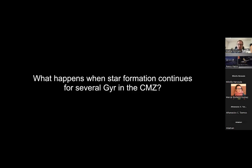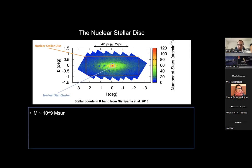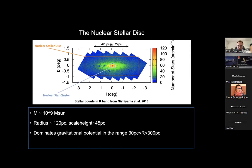When star formation in the CMZ continues for several gigayears, it builds up a structure known as the nuclear stellar disk. Here I show the nuclear stellar disk in star counts from K-band data from Schönrich et al. — the green structure — not to be confused with the nuclear star cluster, the much smaller red structure in the center. The nuclear stellar disk: total mass ~10⁹ solar masses, radius 120 parsecs, scale height 45 parsecs, dominating the gravitational potential between 30 and 300 parsecs from the center; it could be non-axisymmetric, possibly a secondary bar.